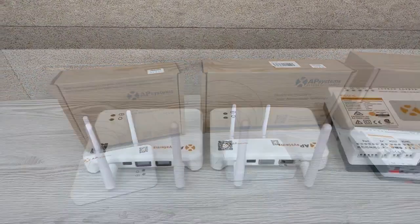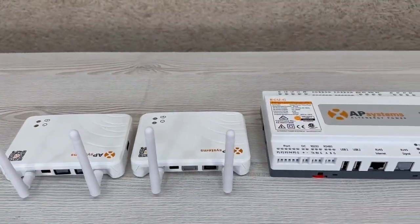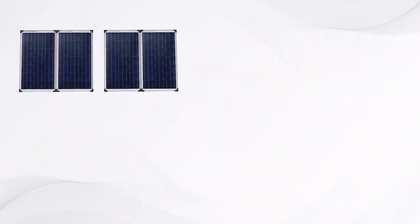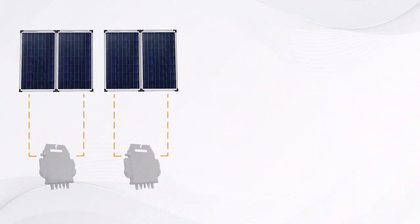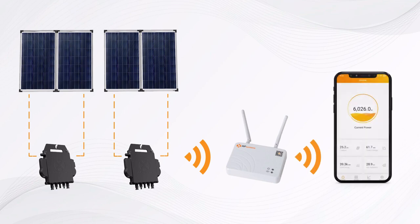These equipments are called energy communication unit, or EQ. The EQ unit is in charge of collecting the module performance data from each individual microinverter and transferring it to an online database in real time, requiring only a single data cable and power supply.